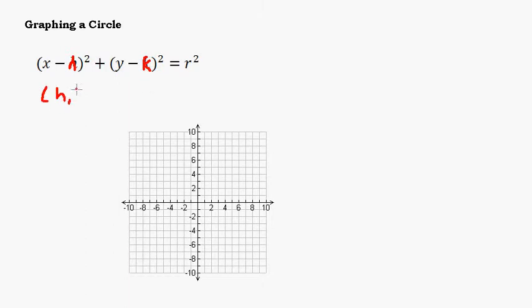(h, k) is going to be the center. There's really two things you need to know about a circle in order to graph it, and that is the center and the radius. If you know those two things you can graph the circle. So I bet you can guess that this r value is going to be the radius.